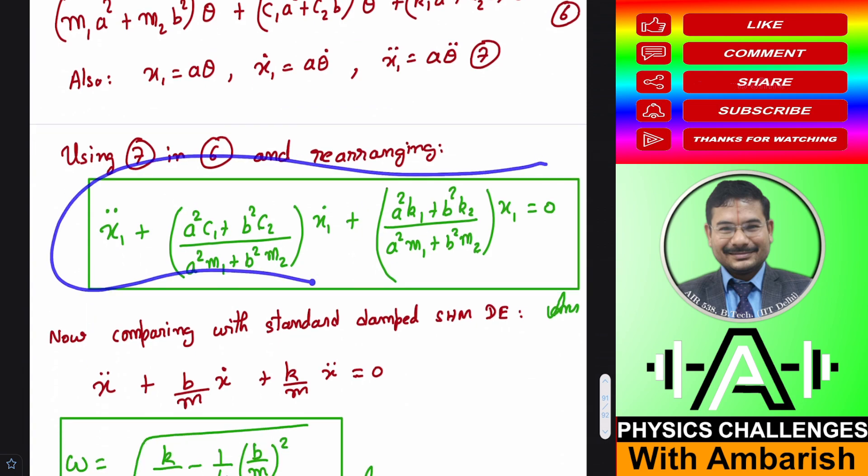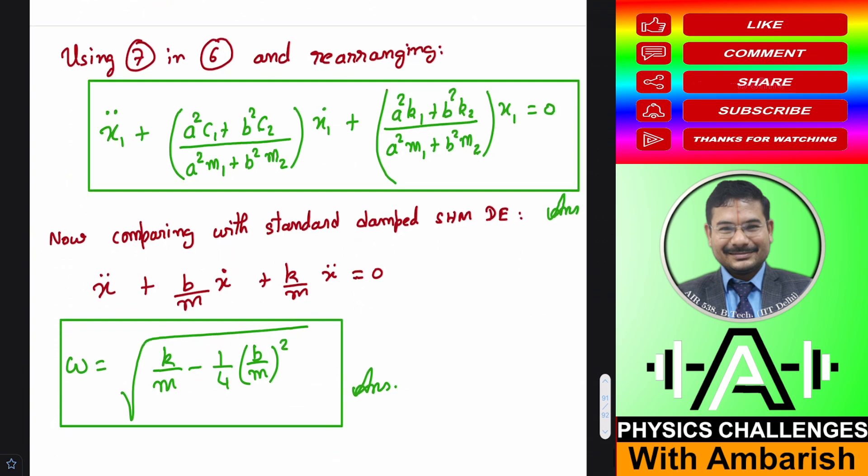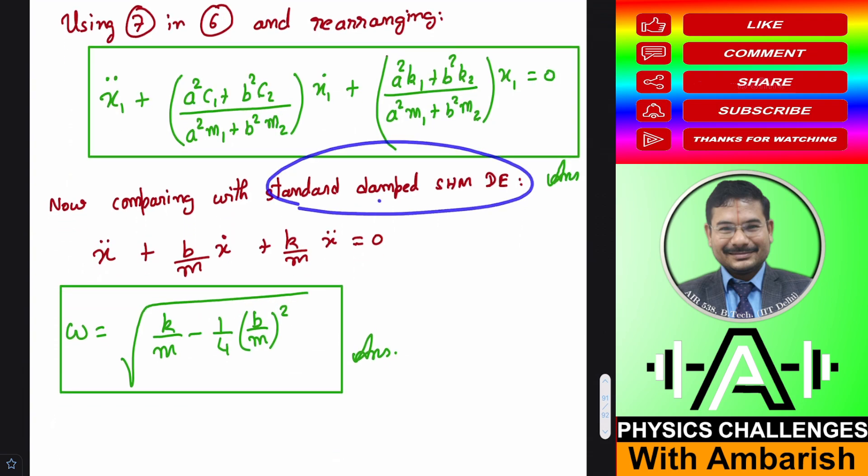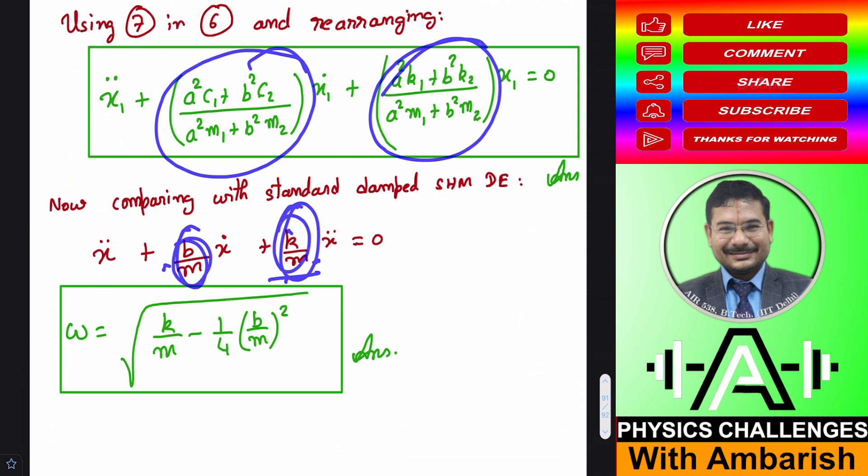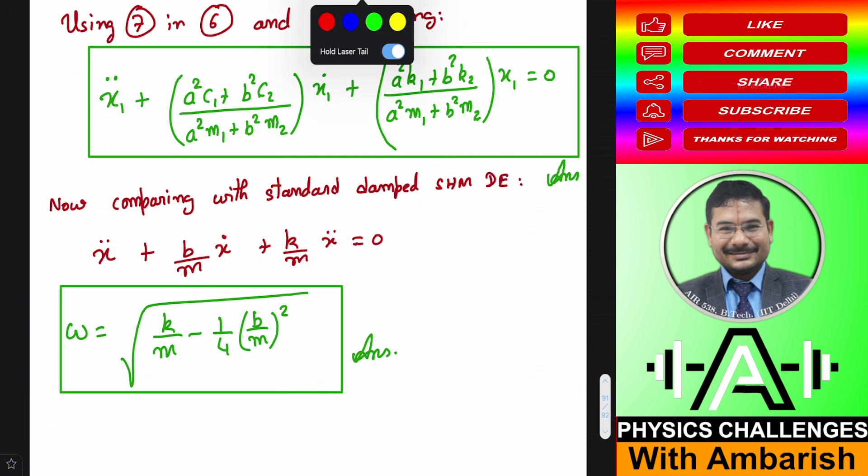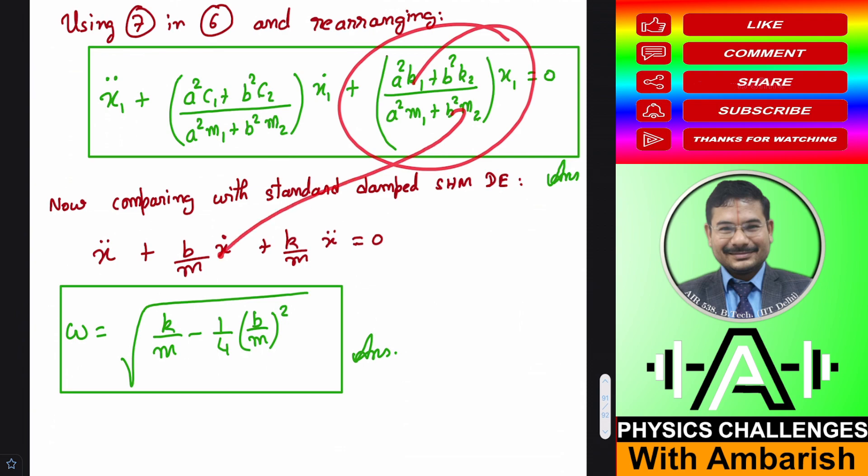And now once we have this equation, now it is trivial to find the angular frequency. So the standard damped oscillation, simple harmonic motion equation. And if you compare this with standard damped SHM DE differential equation, so x double dot plus b by m x dot plus k by m x double dot is equal to 0. So this term serves as our b by m and this term serves as our k by m. And once I have b by m and k by m, the frequency is simply given by standard result root k by m minus 1 by 4 b by m squared. So instead of k by m, you put this term, let me use another pen. So instead of k by m, you substitute this term and instead of b by m, you substitute this term and you have the angular frequency. That's, so that's my analysis for the problem.